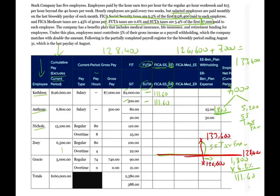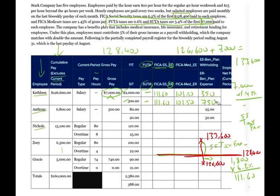Going forward until the end of the year, Caitlin will not have to pay Social Security, and neither will the employer, because she exceeded the limit. For the employee benefit plan, we take $7,000 times 5%, which gives us $350 withheld from the employee. The employer doubles that to $700.